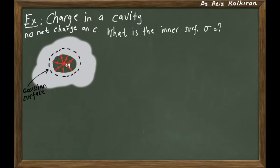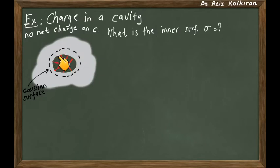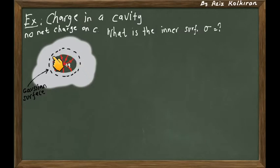To solve this, we will use Gauss's law. We take an imaginary Gaussian surface inside the conductor so that it contains both the inner surface of the conductor — the inner surface of the cavity — and the inner charge inside the cavity. This Gaussian surface need not be a symmetric surface, just an imaginary surface. The only condition is that this Gaussian surface contains the inner surface and the inner cavity.